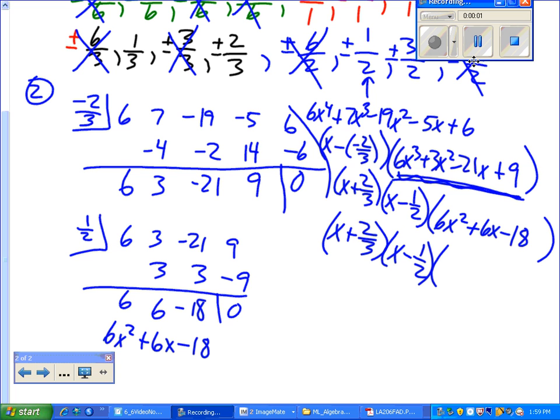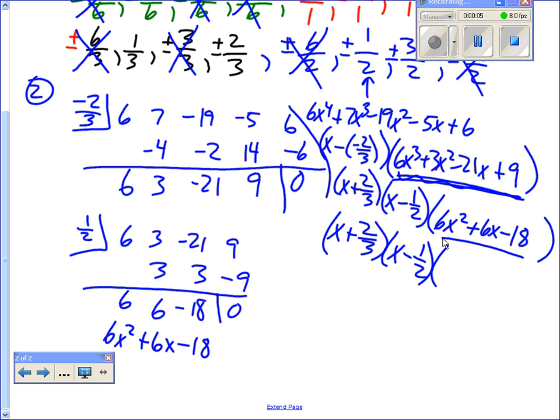I remember, right, we got to this point where we found this 6x squared plus 6x minus 18, right? Because we saw on our calculator two-thirds, I'm sorry, negative two-thirds and positive a half were zero. So we knew x minus negative two-thirds was a factor. We did the division. We found that part right there, right?